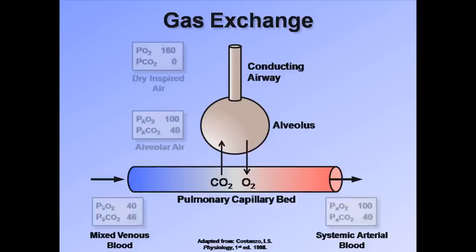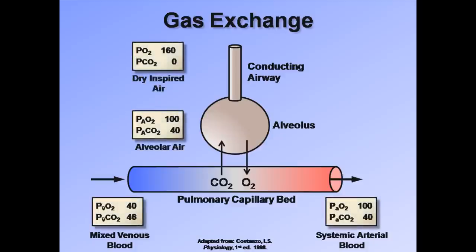Here are typical values for the partial pressures in millimeters of mercury of oxygen and carbon dioxide for a healthy person breathing room air at sea level. Returning mixed venous blood has a typical oxygen pressure of 40 mmHg and carbon dioxide pressure of 46 mmHg. As blood travels through the capillary bed, it reaches an equilibrium with the intra-alveolar air, leaving both the systemic arterial blood and the alveoli with partial pressures of oxygen of 100 mmHg and carbon dioxide of 40 mmHg.